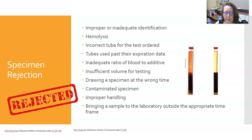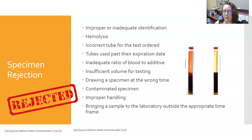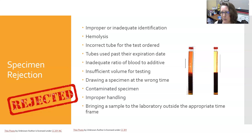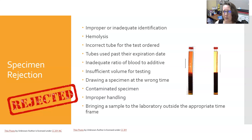A specimen can also be rejected if it was contaminated — for example, contaminated with IV fluid, or a urine specimen contaminated with feces. Improper handling — such as not keeping the specimen at the proper temperature, not protecting it from light, or not transporting it to the lab quickly enough — is another reason. Bringing a sample to the lab outside the appropriate time frame is also grounds for rejection, such as a urine specimen collected in the morning that isn't discovered until that afternoon or evening.